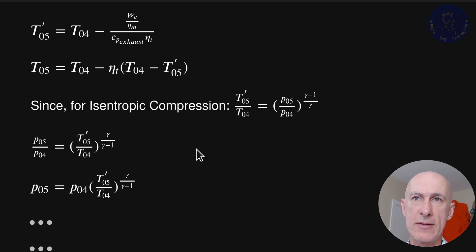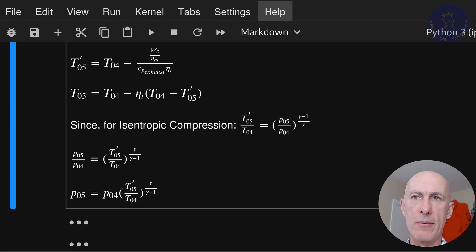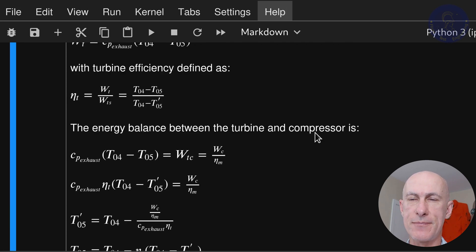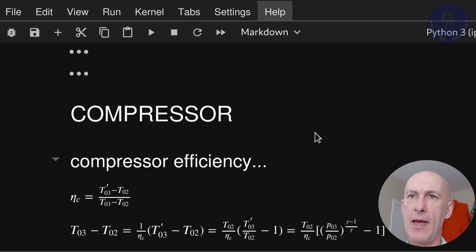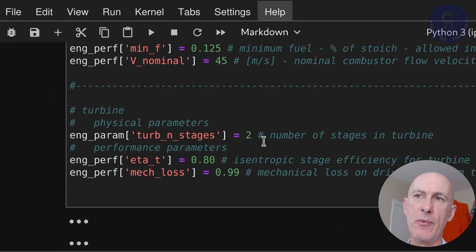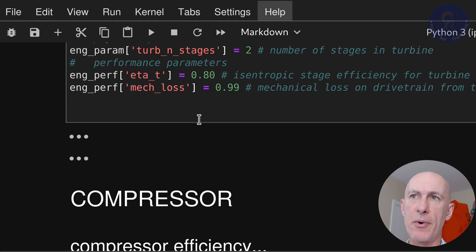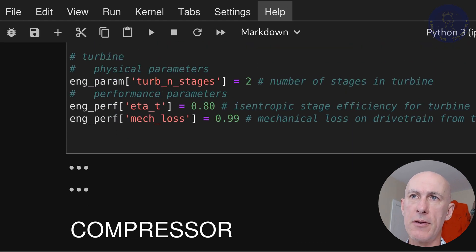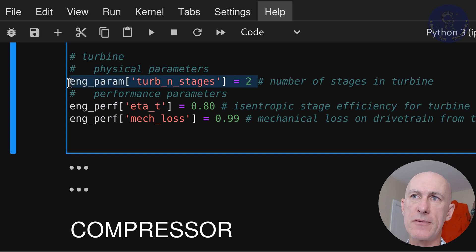Let me scroll to cell number two here where the engine definitions are. Don't worry, the position of the cells will all make sense when we reach the final episode and close the loop on mass flow. Bear with me for now. As before, we start by defining the physical and performance parameters of our turbine. We'll need the number of stages, which goes in the physical parameters dictionary. We'll need eta T or isentropic efficiency of the turbine and eta M or mechanical losses, which go in the performance dictionary. And now let me scroll down and look at the actual function.